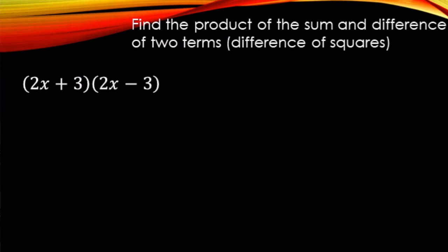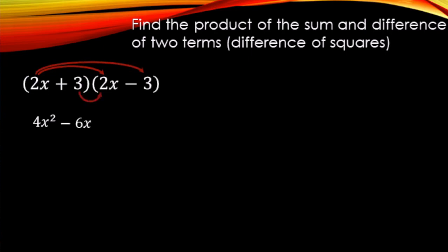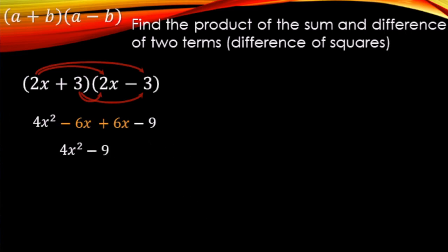For this example, we're going to multiply — it's called the product of the sum and the difference of two terms, and the pattern is difference of squares. The numbers are exactly the same: 2x and 3, 2x and 3. The only difference is one's a plus, the other one's a minus. FOILing this out: 2x times 2x is 4x squared; 2x times negative 3 is negative 6x; 3 times 2x is positive 6x; and 3 times negative 3 is minus 9. Adding like terms: 4x squared, the minus 6x plus 6x makes zero, so we ignore that, and the constant term is minus 9.